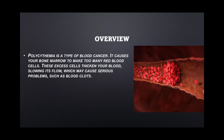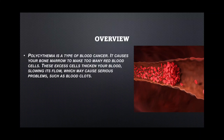These excess cells thicken your blood and slow its flow, which may cause serious problems such as blood clots. As seen in this picture, when there is an enormous amount of red blood cells in the blood, it goes into the small blood vessels present in the brain, heart, and many other organs, and it can block the blood flow. Blockage of blood supply to the small capillaries in the brain can lead to stroke, aneurysm, and many other pathological conditions.